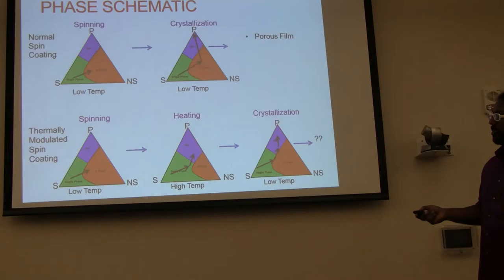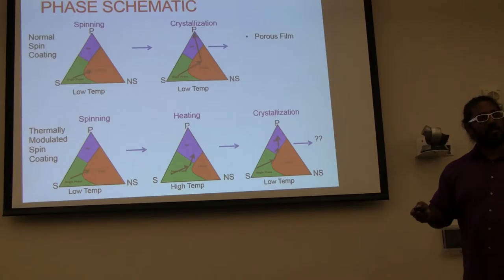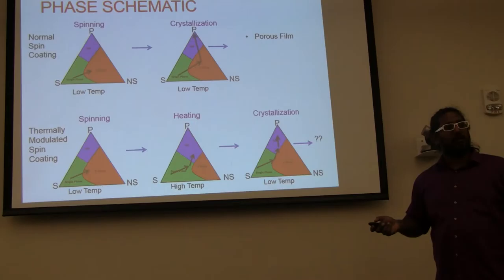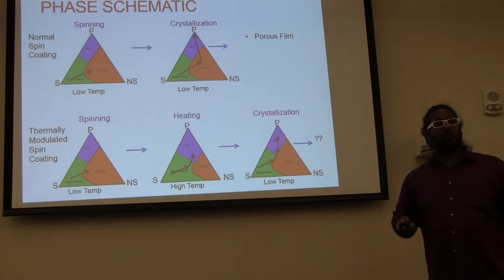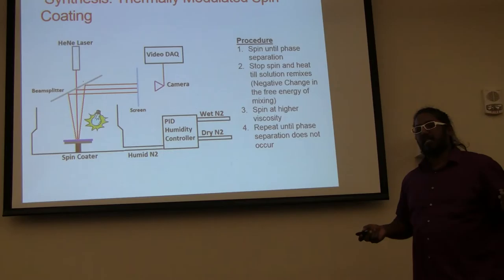So the idea is, how can we get to this blue phase and still remain at a low enough temperature to crystallize into a ferroelectric phase? The idea would be to let the film go into this two-phase region. And then by heating it up, we can shift this boundary. So by heating it up, we shift the boundary, and then it goes back into a single phase, and then see if we can evaporate the solvent and non-solvent fast enough to get to this blue phase without going back into this orange phase. And then once we're in this blue phase, we can cool the temperature down and then let the solvent evaporate slowly and crystallize it at a lower temperature.